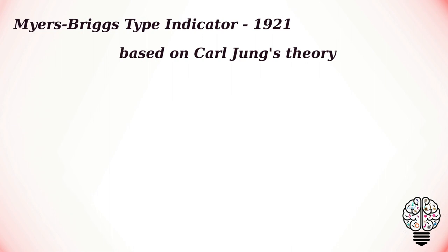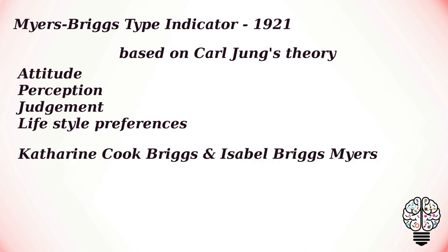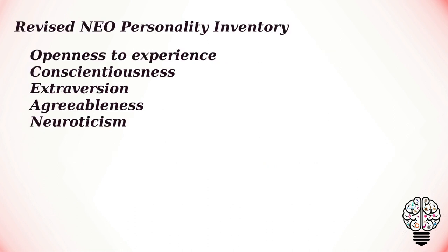The next is the Myers-Briggs Type Indicator, which is based on Carl Jung's theory of personality. It measures individuals across four dimensions: attitude, perception, judgment, and lifestyle preferences. This test has been criticized for its lack of statistical validity and low reliability. It was developed in 1921 by Katherine Cook Briggs and her daughter Isabel Briggs Myers.